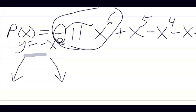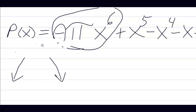We have just graphed the end behavior of p(x) = -πx⁶. The end behavior looks like y = -x² — going down on both ends.